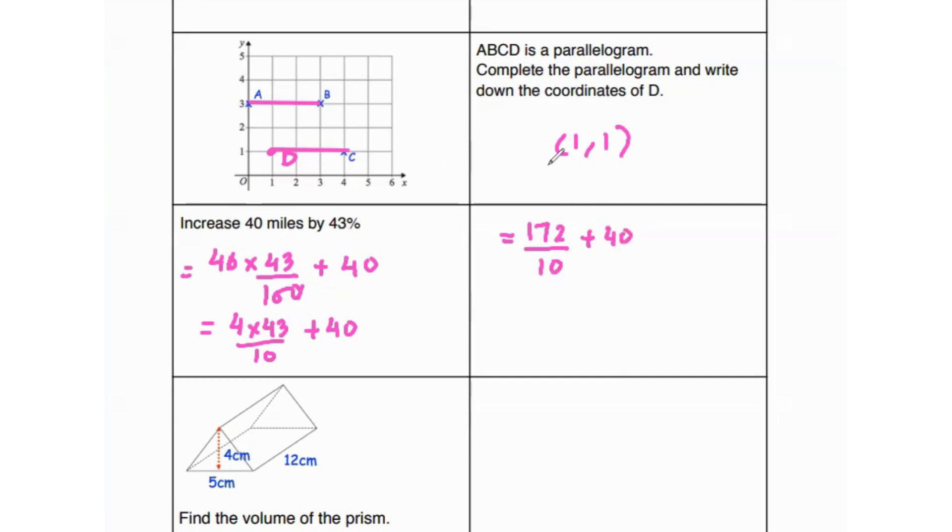Like we did in the previous question, to get rid of the decimal, we move the decimal one place to the right. Over here, since we have a 10 in the denominator, we will move the decimal one place to the left. So that's going to be 17.2 plus 40. And that's going to be 57.2 miles.